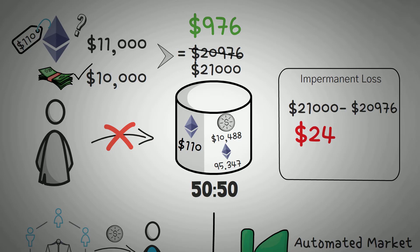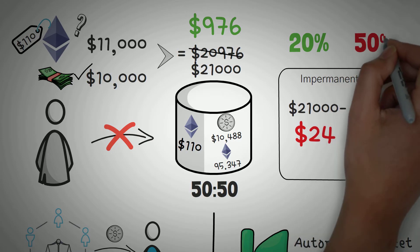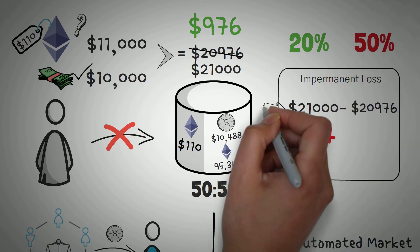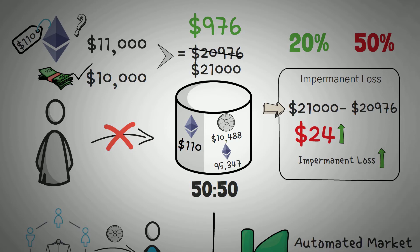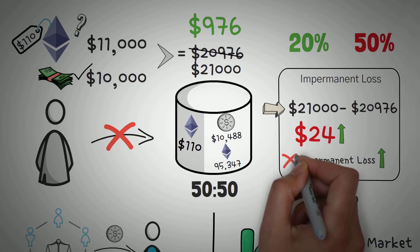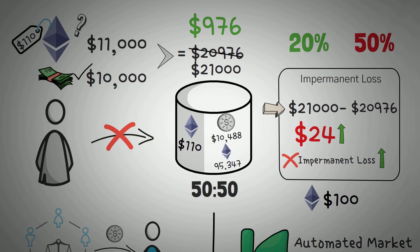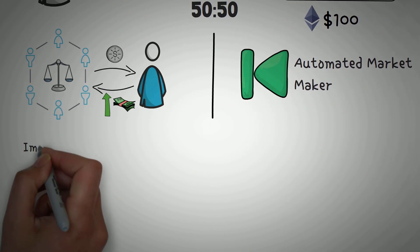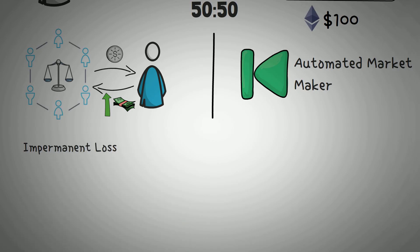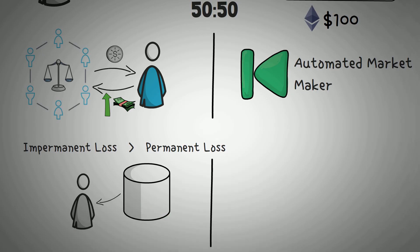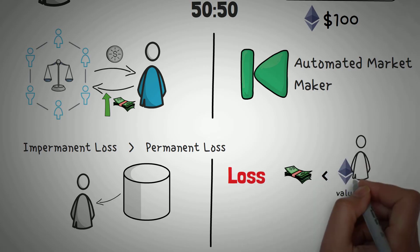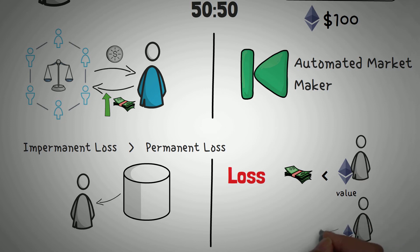Now, $24 might not seem like much, but imagine a similar scenario where the price jumps 20% instead of 10%, or the price dropped by half. In short, impermanent loss is caused when the difference between two assets in a pool is changed — as this change increases, so does the impermanent loss. So if Ethereum goes back to $100, then the impermanent loss is basically cancelled, because both assets would be the same as when the liquidity provider initially invested them. They call it impermanent loss because it only becomes permanent whenever you cash out your liquidity. Until you do that, there is still an opportunity for the loss to normalize itself out. So to sum it up, impermanent loss is the loss that you get when you have less money by investing in a liquidity pool compared to the value of the assets you would have had if you just held them.